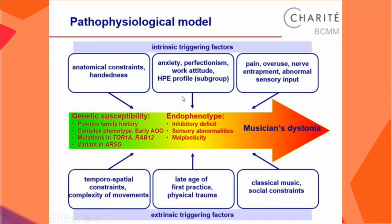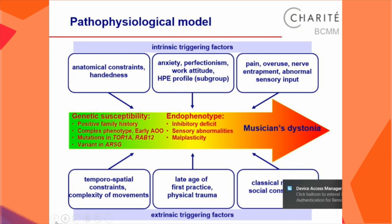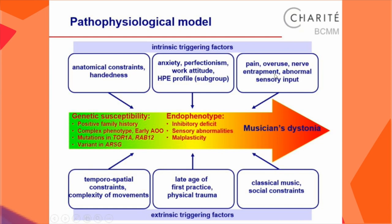The current pathophysiological model suggests that on the basis of a genetic predisposition, additional triggering factors may lead to a so-called endophenotype — as yet undefined for musicians' dystonia — and ultimately to the manifestation of the disease. Triggering factors include high temporal-spatial constraints on the instrument, the typical social constraints of classical music, special personality profiles like prominent anxiety and perfectionism, and local pain, overuse, or nerve trauma. When these triggering factors combine with genetic predisposition, a person may develop musicians' dystonia.